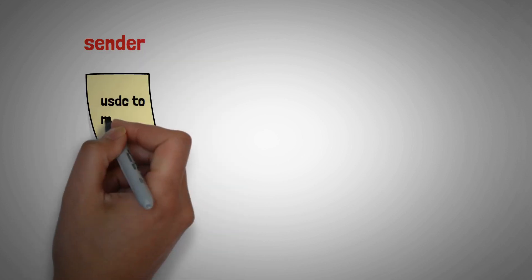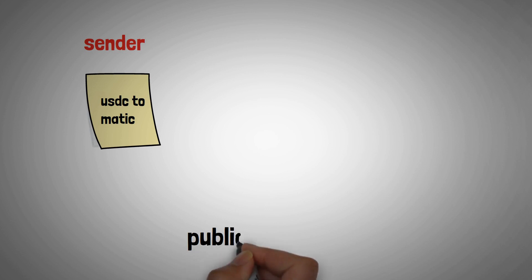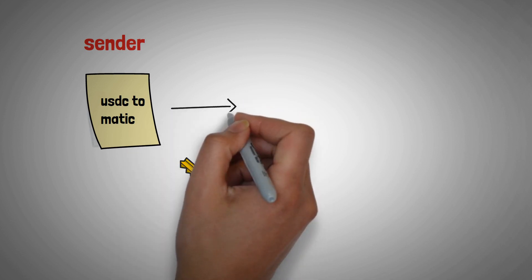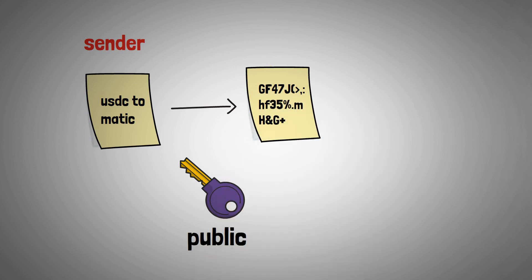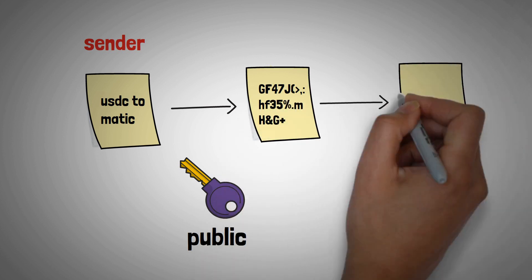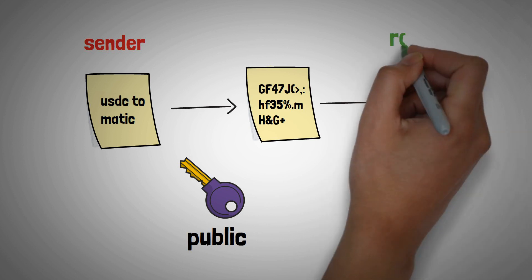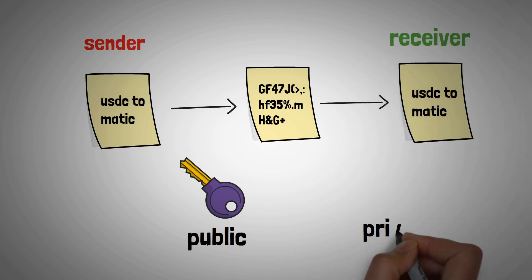The sender sends a message in plain text. The message is encrypted by the public key and turned to ciphertext. Then the message is decrypted and turned into plain text using the recipient's private key.